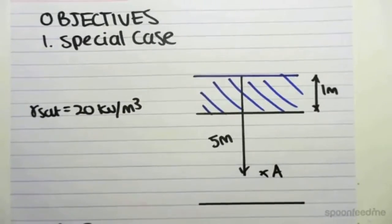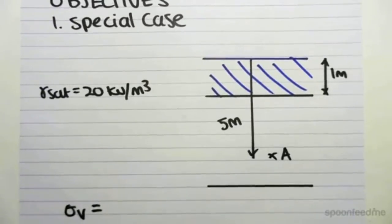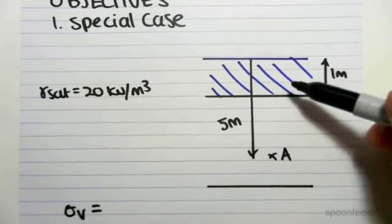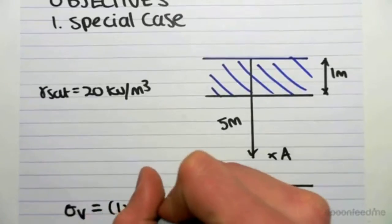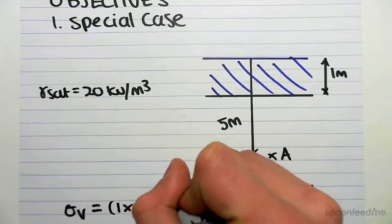So the first thing we're going to do is find the effective stress. The effective stress will be the weight of the water. So it will be 1 times gamma w, which is 9.81,